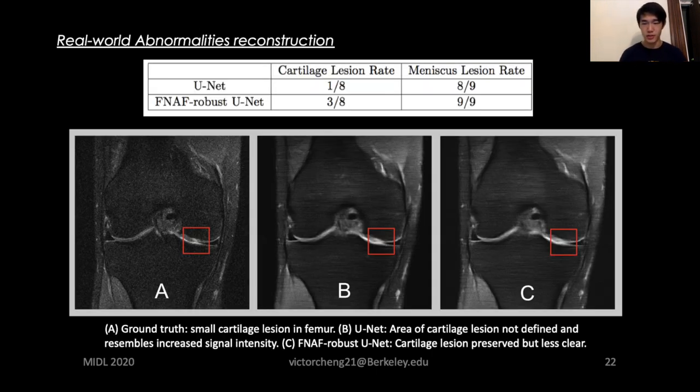For evaluation of real-life abnormalities, we have a musculoskeletal imaging trained MD inspecting and identifying abnormalities of clinical prevalence in 51 volumes from the validation set. The abnormalities include cartilage lesions, meniscal tears, and meniscal degenerations. The results show that the FNAF robust U-Net is marginally better out of the small numbers of abnormalities found than the U-Net. Although further extensive evaluation is needed, this is an encouraging result, considering that the defined FNAF space might not be big enough to contain the real-life abnormalities.